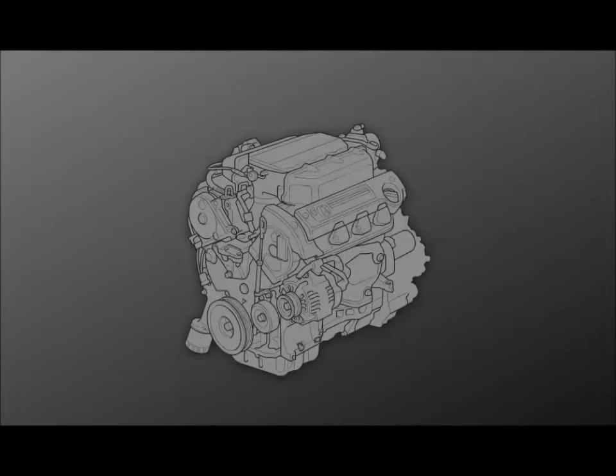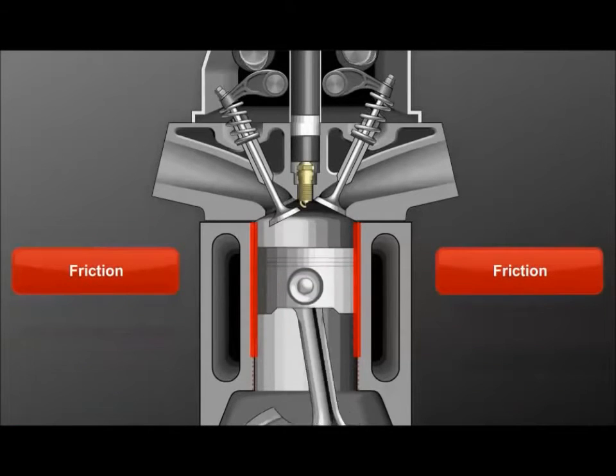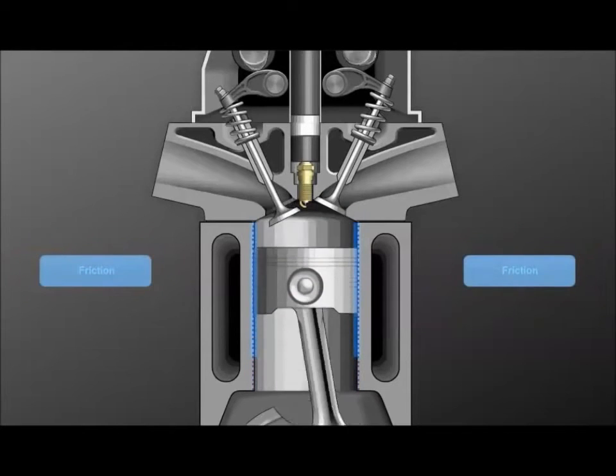Lubrication represents oil's primary function. Inside the engine, moving parts generate friction. Oil reduces friction between these surfaces by creating a narrow film of oil molecules. This oil film reduces friction and heat.